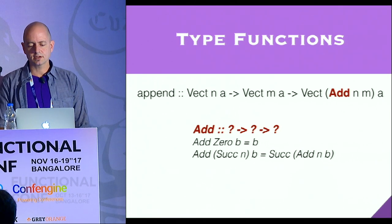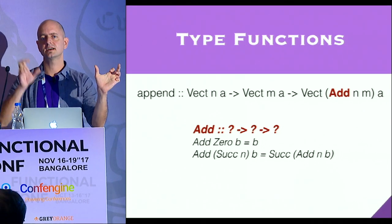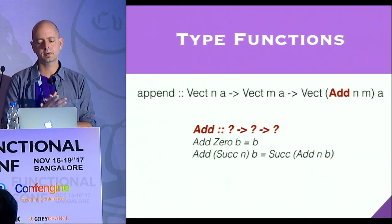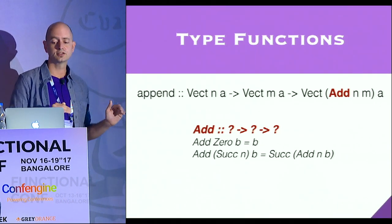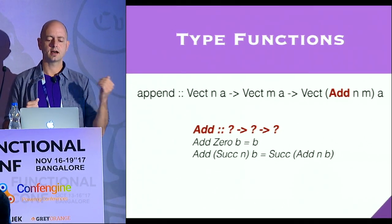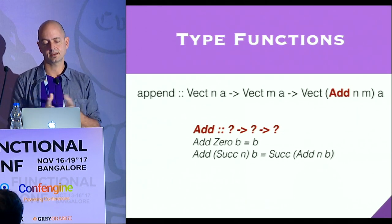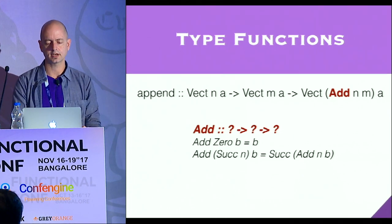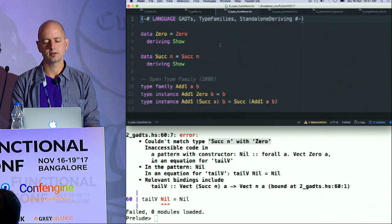But what if I wanted to do something like append? I append a list of size N and M, and the resulting type should be N plus M. But I can't use regular plus, because regular plus is defined at the term level. I want to write something conceptually like Add — a type-level addition function. The question is, what would the signature of that type-level function look like? How you do that in Haskell is with something called type families.